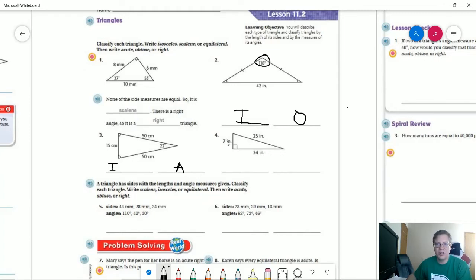And then for our third one here, we would have a scalene triangle because none of these side lengths are matching, and it would be a right triangle.